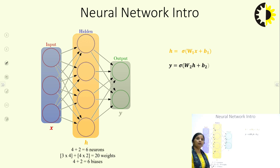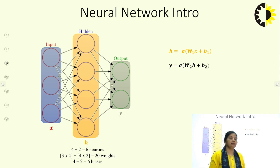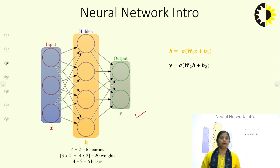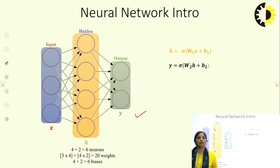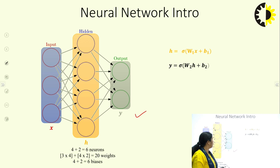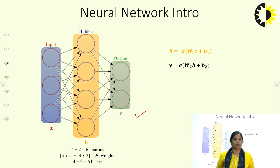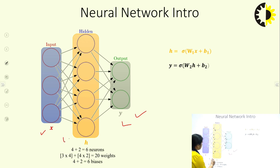Let us start with the introduction. A neural network has different layers: one input layer, one output layer, and hidden layers. The input layer corresponds to what inputs are given, and the output tells us what we want to find. For example, in digit classification, the output layer has 10 nodes corresponding to digits 0 to 9. The example shown here is a feed-forward, fully connected neural network.